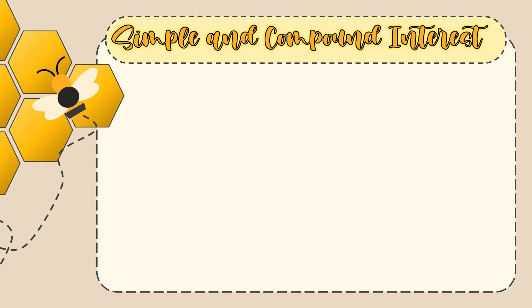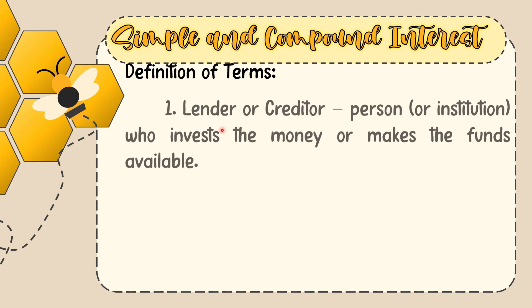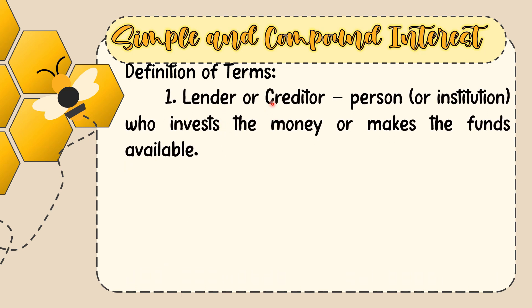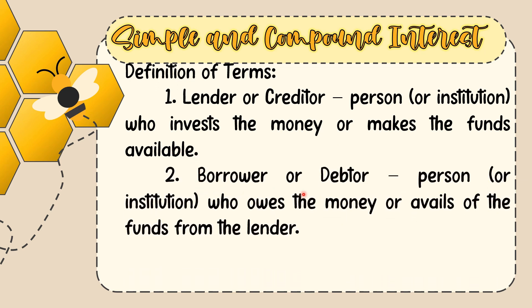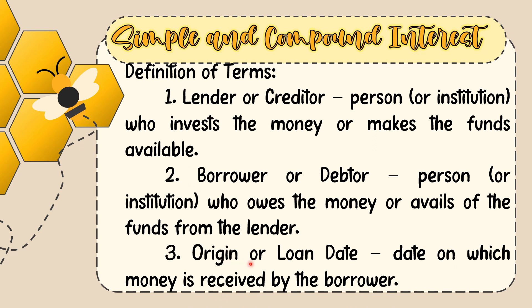To start our lesson, let us first define some important terms. The first one is the lender or creditor — a person or institution who invests the money or makes the funds available. The second one is the borrower or debtor — a person or institution who owes the money or avails of the funds from the lender. The third one is the origin or loan date — the date on which money is received by the borrower.